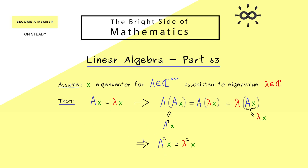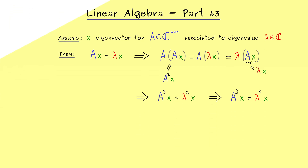We could do the same calculation again and conclude that A³ also has x as an eigenvector. We can show by induction that we get this result for every natural power of A — the power m simply transforms the eigenvalue to λᵐ. Hence, if you know the eigenvalues of A, you immediately know the eigenvalues of any power of A. And since this holds for every natural power m, we can formulate this for polynomials as well.